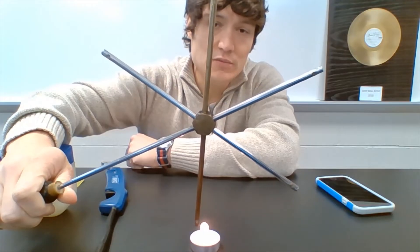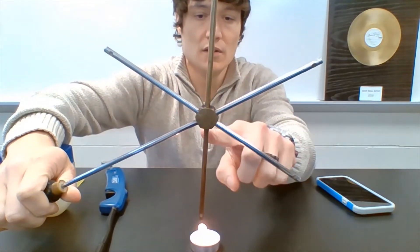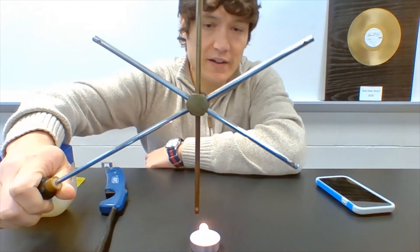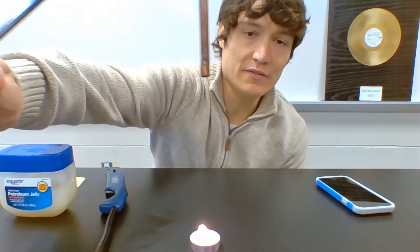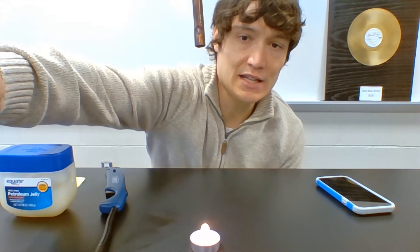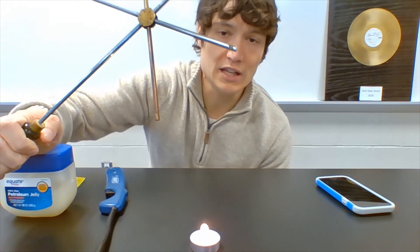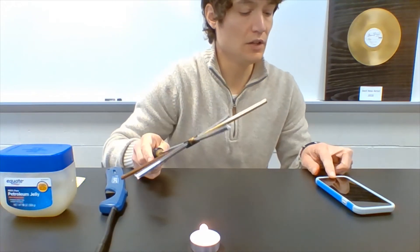And each of these metals will conduct that heat from the candle through the metal to the Vaseline at the very end of the appendage there. So if you look at the very end, there is a small little indentation where I have Vaseline placed into on each arm of the star. So here we go.